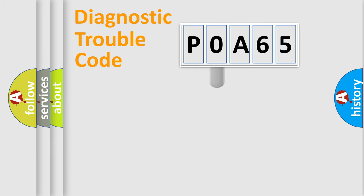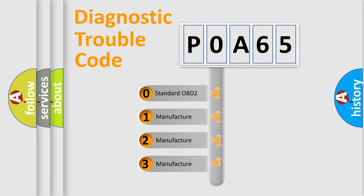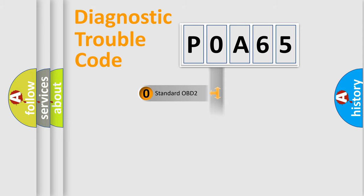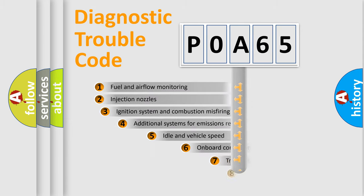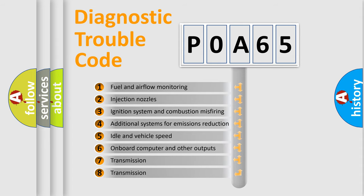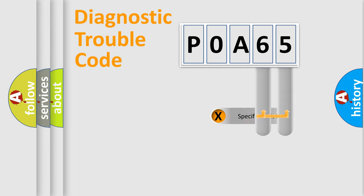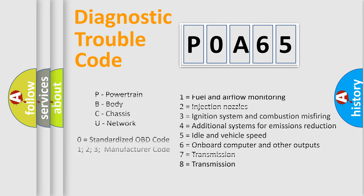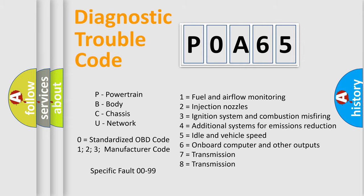This distribution is defined in the first character of the code. If the second character is expressed as zero, it is a standardized error. In the case of numbers 1, 2, or 3, it is a manufacturer-specific error expression. The third character specifies a subset of errors. The distribution shown is valid only for the standardized DTC code. Only the last two characters define the specific fault of the group. Note that such a division is valid only if the second character code is expressed by the number zero.